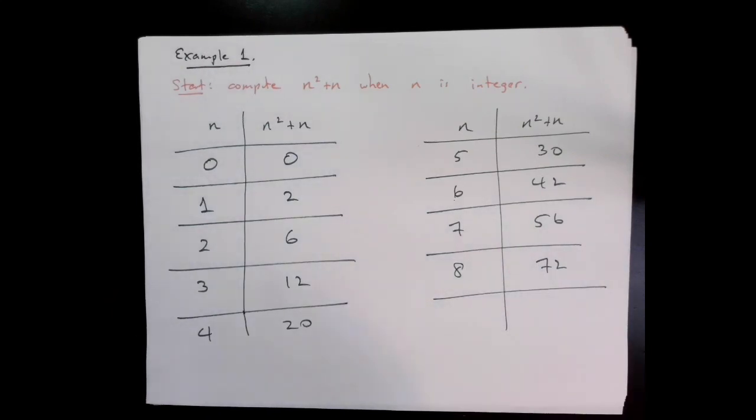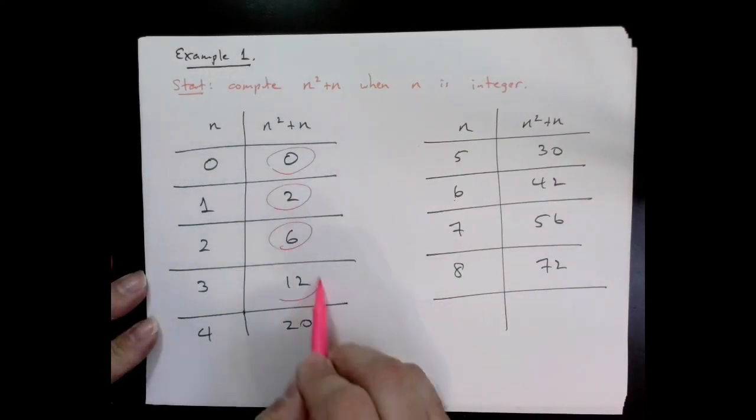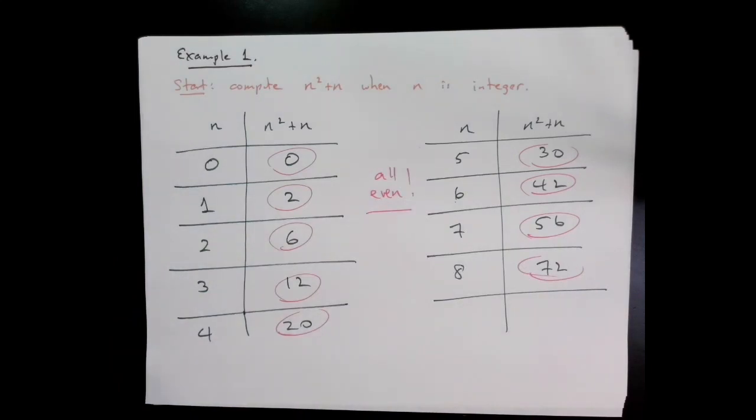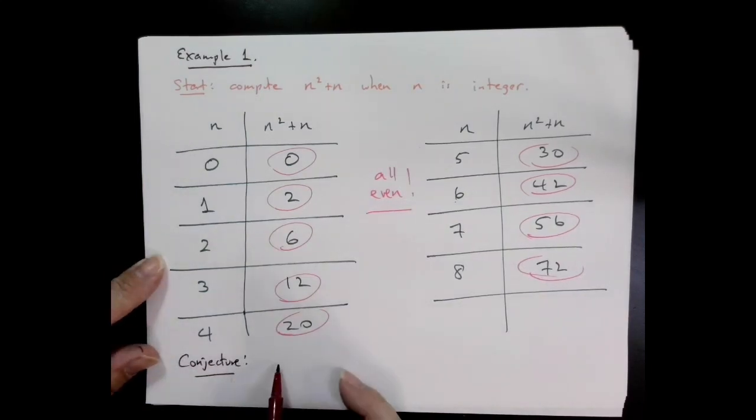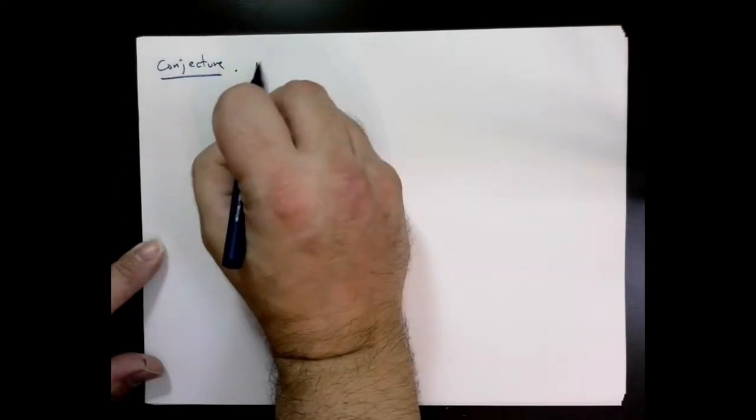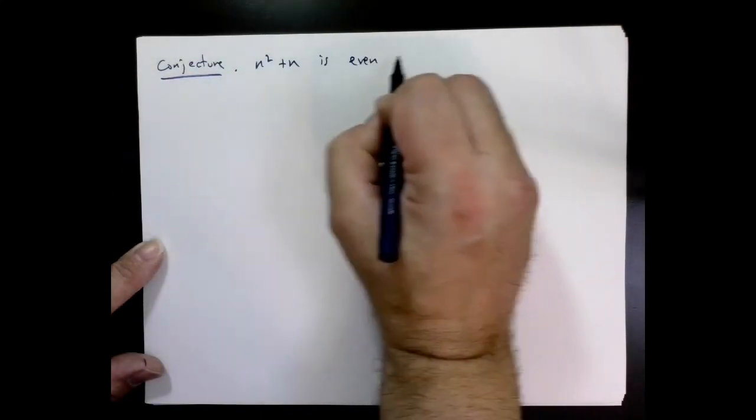Now we're in the position to make a conjecture: is n² + n even for any n? Note that this table is not a proof of the statement—we'll be very careful about what's a proof and what's not. This is just a collection of examples. However, it gives us a pattern, a good guess, which is that this thing is always even.